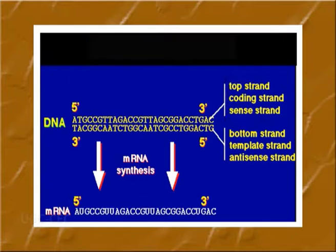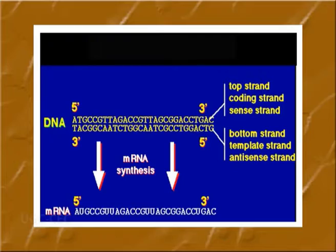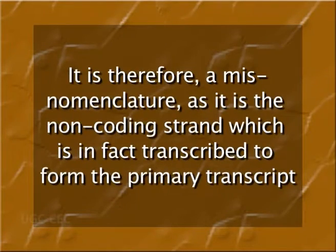The DNA strand which has sequence homology with the RNA is known as the coding strand. The second strand, which is complementary to RNA and serves as the template for RNA synthesis, is known as the non-coding strand. It is therefore a misnomenclature, as it is the non-coding strand which is in fact transcribed to form the primary transcript.